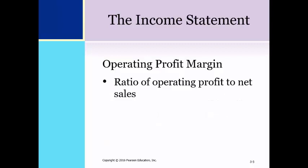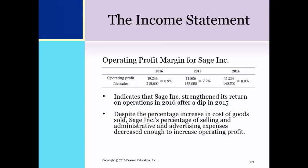The Operating Profit Margin is the ratio of Operating Profit to Net Sales. This illustration shows the calculation of Operating Profit Margin for Sage Inc. for 2014, 2015, and 2016. The ratio dipped in 2015 but recovered in 2016 and improved over 2014.